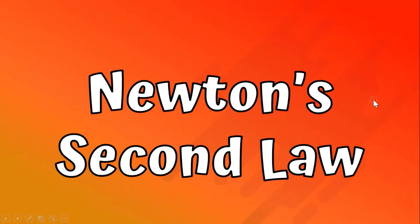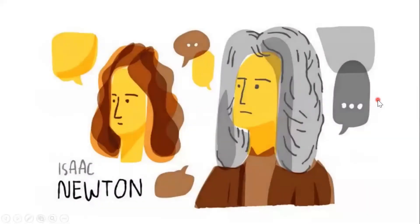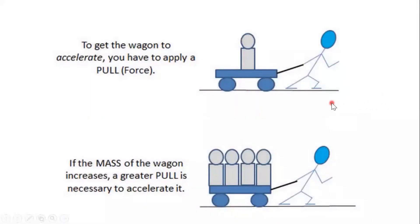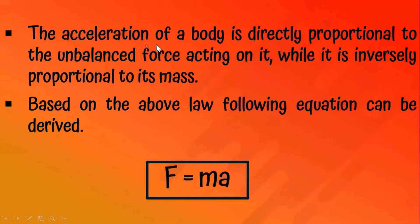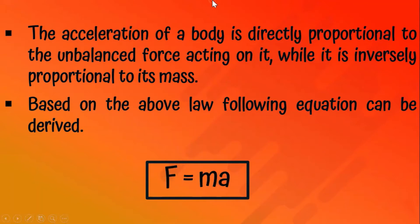Newton's second law. The acceleration of a body is directly proportional to the unbalanced force acting on it, while it is inversely proportional to its mass. Based on the above law, the following equation can be derived: F equals ma, where F means unbalanced force, m means mass, and a is acceleration.